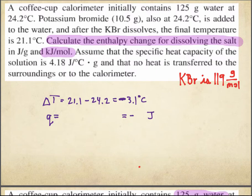What's the enthalpy change for dissolving the salt in joules per gram and kilojoules per mole? Assume the specific heat capacity of the solution is the same as water, and no heat transfer occurs to a calorimeter. Potassium bromide is 119 grams per mole. I'm probably going to have to change 10.5 grams of potassium bromide to moles at some point.